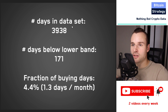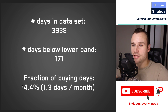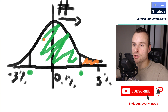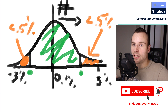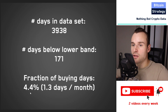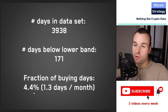In the data set I had around 4,000 days of Bitcoin data, and the number of days where the price was below the lower Bollinger Band was 171 — so the fraction of buying days is 4.4% of the overall data set. This is actually more than expected, since with a normal distribution each tail end should have only 2.5% of cases. Getting 4.4% instead of 2.5% already shows that a normal distribution is probably not 100% accurate for Bitcoin — this may be due to a skew in the curve or sample size.